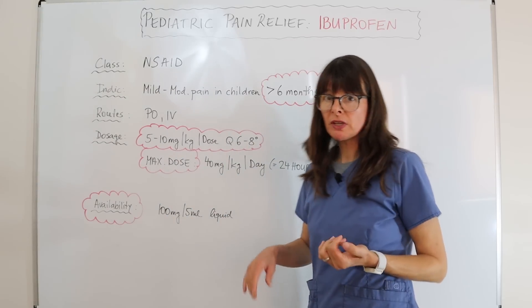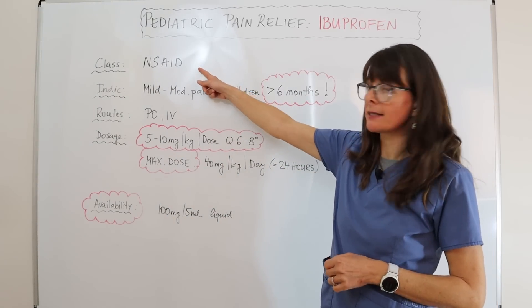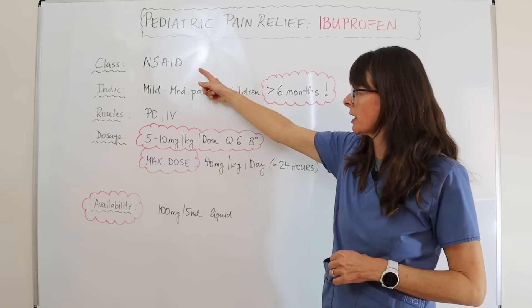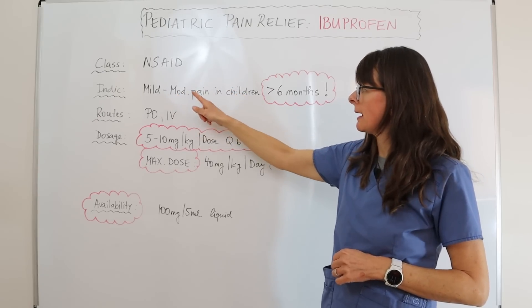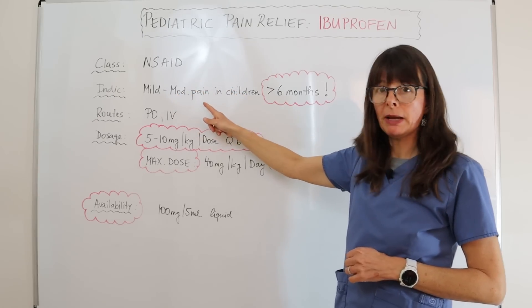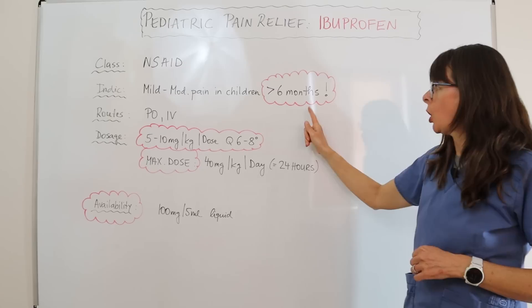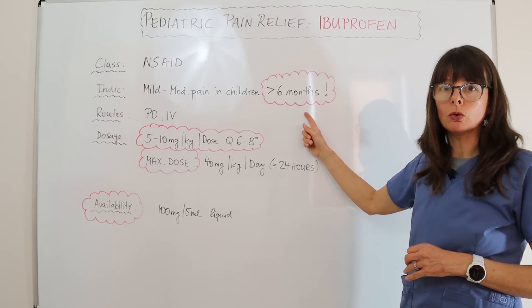Ibuprofen is classified as an NSAID — a non-steroidal anti-inflammatory drug — and it's indicated for mild to moderate pain in children over six months old.